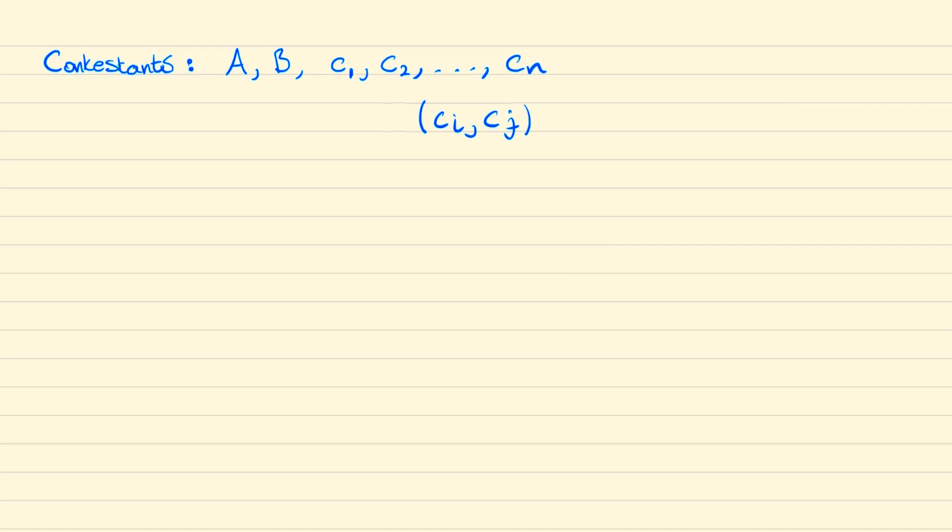Now given that we have n players, then for ci we would have n choices and cj must be one less, so we have n minus one choices. And since we're looking for exactly one match played between the two, we need to halve this expression. This is also the same as using the choose function, so from n players we are choosing two of them.